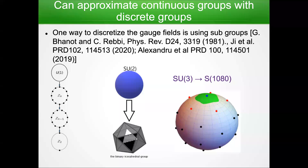One way to approximate these continuous groups such as U1, SU2, and SU3 is by discretizing them. U1 can be broken up into cyclic groups or clock models, SU2 can be broken up into binary polyhedral groups, and SU3 has similar decompositions into higher-dimensional representations. This has a long history of research and is still an active area of study. It has a very natural representation on a quantum computer, where each of these different group states corresponds to a different state in your quantum system.